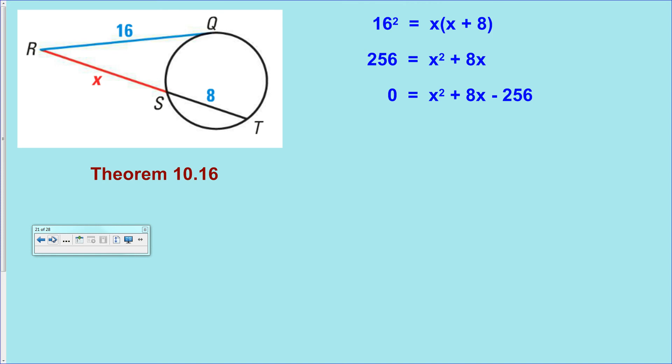So, opposite of b, plus or minus, square root of b squared minus 4ac, all over 2a. Set it up. It looks like that. Make sure that you carry this negative along with that 256, because otherwise you'll get a negative under the root.